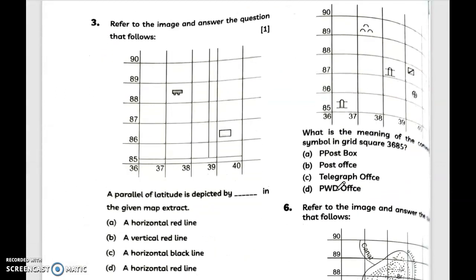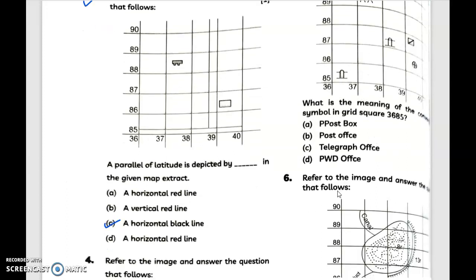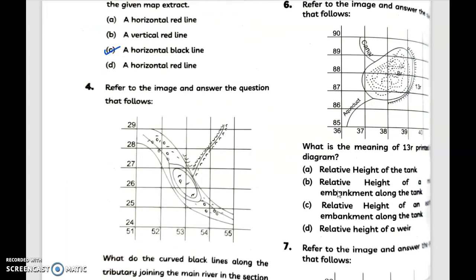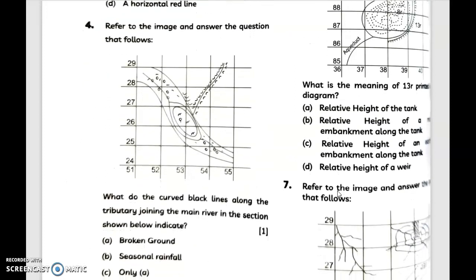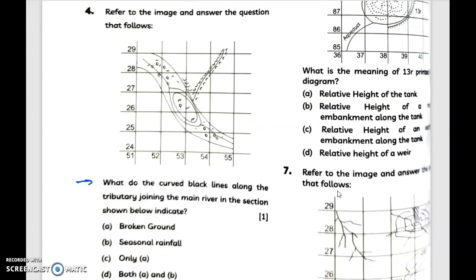Question number three: refer to the image and answer the question that follows. A parallel of latitude which is depicted in the given map extract - answer is option C, a horizontal black line. Moving to question number four, refer to the image and answer the following: where do the curved black lines along the tributary joining the main river in the section shown below indicate?